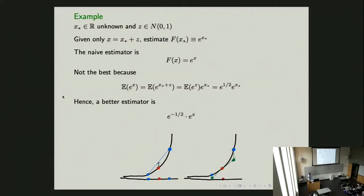Let me show the picture — I drew it last night. The exponential function is shown, with the red point as ground truth. Polluting with Gaussian noise gives blue points. Evaluating the exponential at the blue points and taking the average overestimates the red point. Using the better estimator, we shrink the blue points by a factor of e^(−1/2), bringing them down so their average exactly passes through the red point. This is the most important picture of the whole talk.